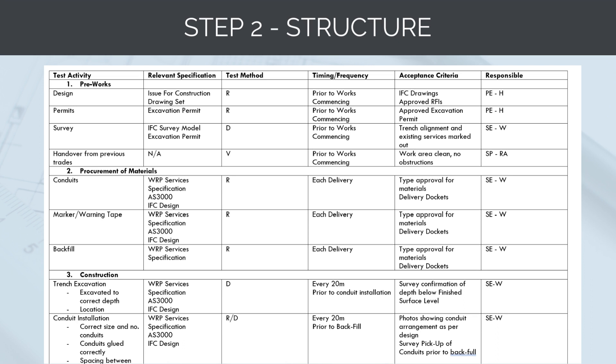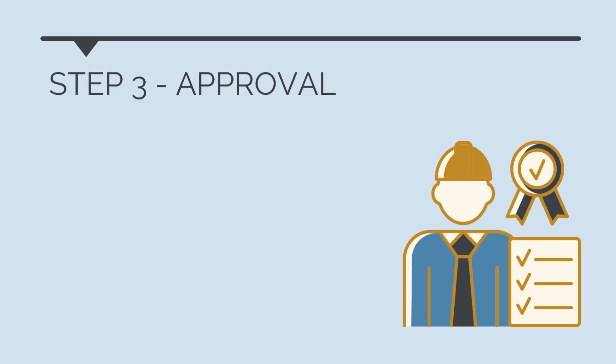I recommend going through and reading the example inspection and test plan in detail — you'll get a better idea of the types of checks and test methods we document. For example, under section three, construction, our test activity is trench excavation, which we want to ensure is excavated to the correct depth below finished surface level. The governing specifications are the IFC design, project, and Australian standards. We want to get a survey confirmation of the trench depth below finished surface level and a site engineer will check this, and we only have it down as a witness point.